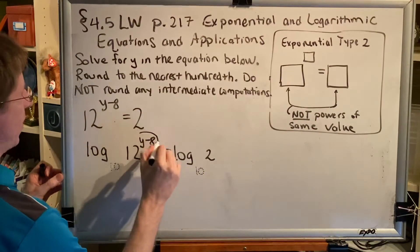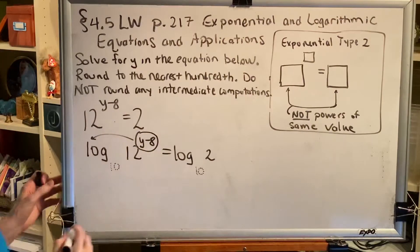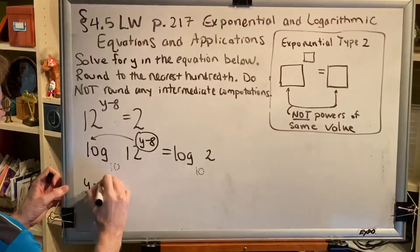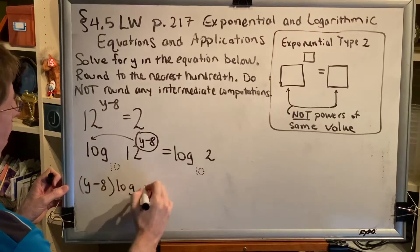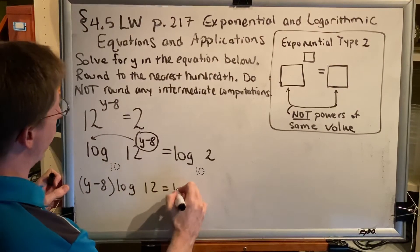Now I'm going to take this and move it to the front of the log, so that I get (y minus 8) in parentheses times the log of 12 equals the log of 2.